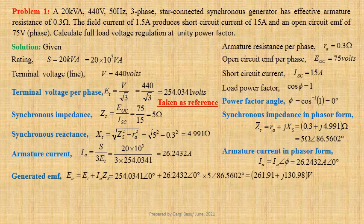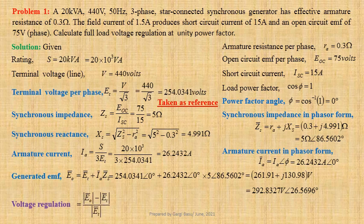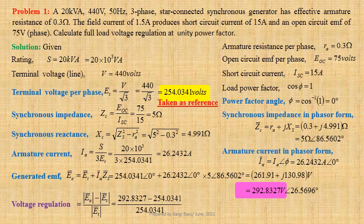This may be written in polar form as 292.8327 volts at an angle 26.5696 degrees. Let us now determine voltage regulation, that is E0 minus ET divided by ET. Using values we get (292.8327 minus 254.0341) divided by 254.0341, giving 0.1527 per unit or 15.27 percent.